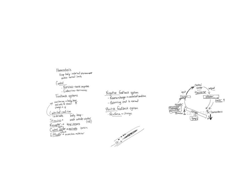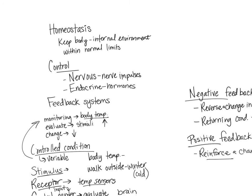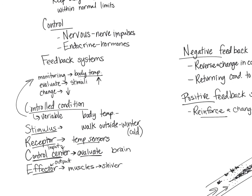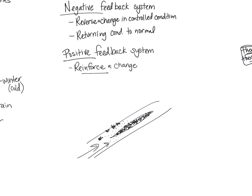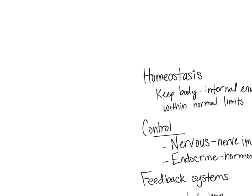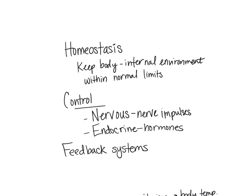Our positive feedback loop is much less common than our negative feedback loop. In summary, homeostasis keeps the body's internal environment within normal limits using feedback systems with controlled conditions, stimuli, receptors, control centers, and effectors. Negative feedback examples include body temperature, blood glucose, CO2 and O2 levels. Positive feedback examples include vessel tears leading to clotting and childbirth.